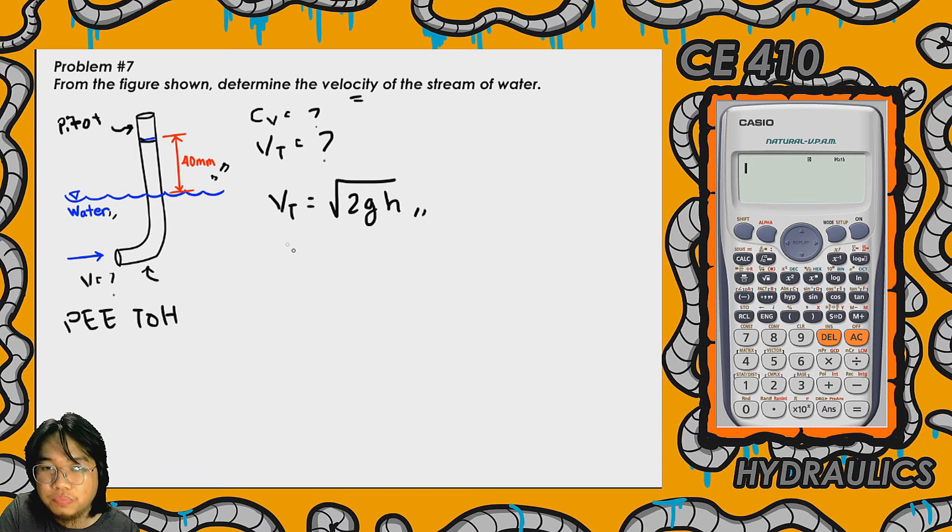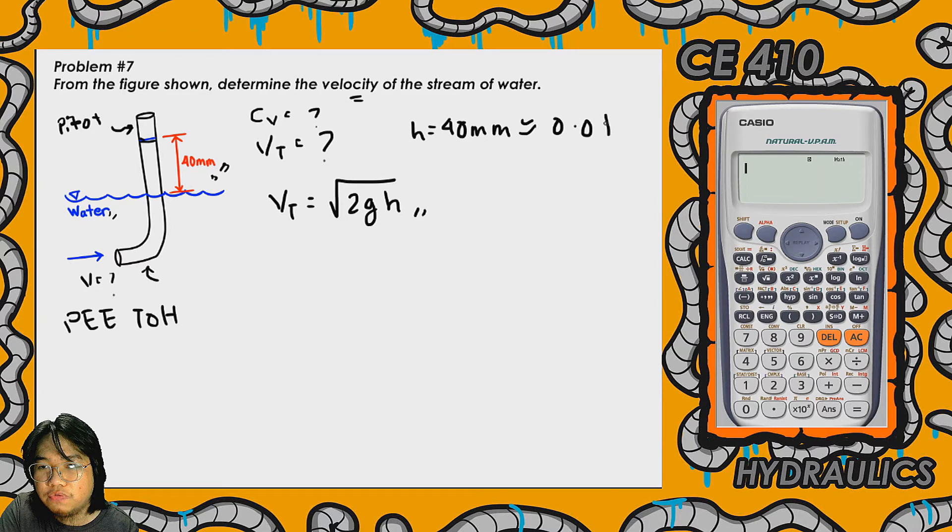So that is 40 millimeters. h equals 40 millimeters, or equivalently 0.04 meters.